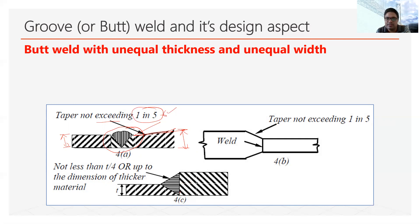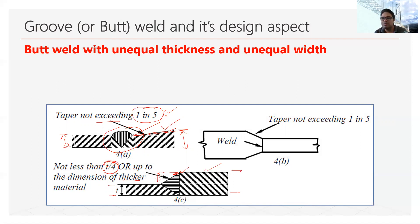If tapering is not possible and the difference between thickness is more than 25%, we generally weld up to a certain position. This thickness is not less than T/4, where T is the thickness of the thinner plate, or up to the dimension of the thicker material — generally we do it up to the dimension of the thicker material.